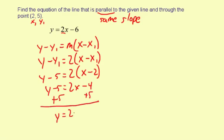y equals 2x plus 1. So that's the equation of the line that is parallel to y equals 2x minus 6 and passes through the point 2, 5.